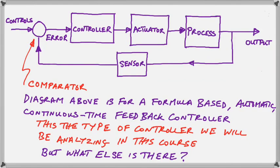Hello and welcome to this course on control systems. Here is a diagram for a formula-based automatic continuous time feedback control system. Basically what happens is you set the controls and the feedback element kicks in to make sure that your output is what your controls are set to. If there is any discrepancy, an error signal will be generated which will cause the controller to react to ensure that the output is what you have set with your controls.